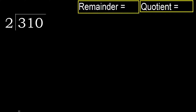310 divided by 2. 3 is not — let's try with 2. 2 multiplied by which number is nearest to 3, but not greater?